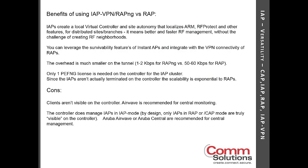Some of the benefits are that the Instant APs create a local virtualized controller with site autonomy that localizes all the ARM and RF Protect functionality at the local branch. This means it takes place faster and is more focused on a particular site, as opposed to being calculated for multiple sites back at a centralized location. For those who have done controller-based APs over large campus environments, scaling those ARM decision processes can be a challenge — using an Instant AP in this model localizes all of those decision capabilities.